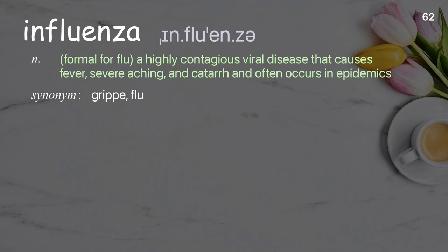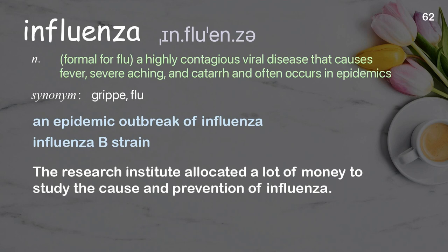Influenza: formal for flu; a highly contagious viral disease that causes fever, severe aching, and catarrh, and often occurs in epidemics. Examples: an epidemic outbreak of influenza, influenza B strain. The research institute allocated a lot of money to study the cause and prevention of influenza.